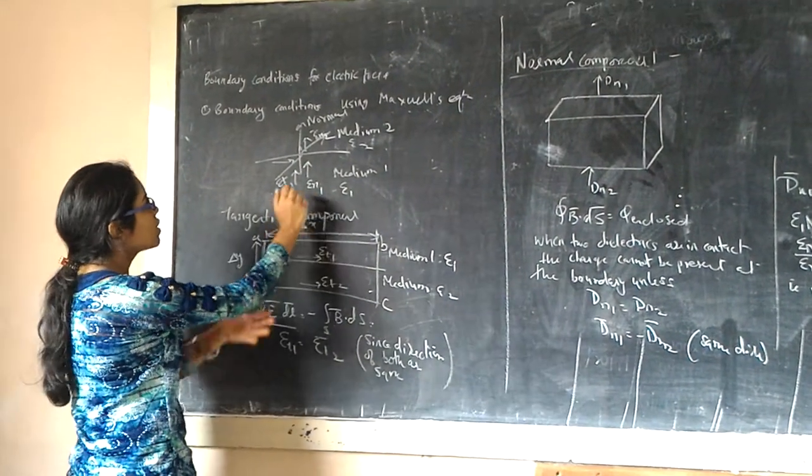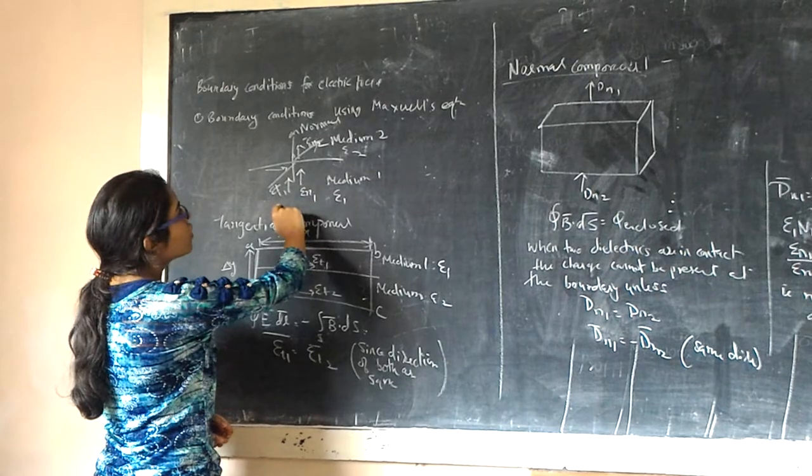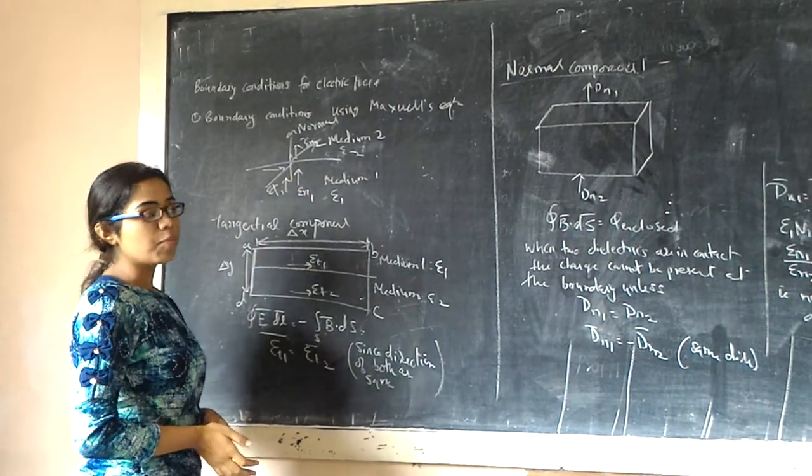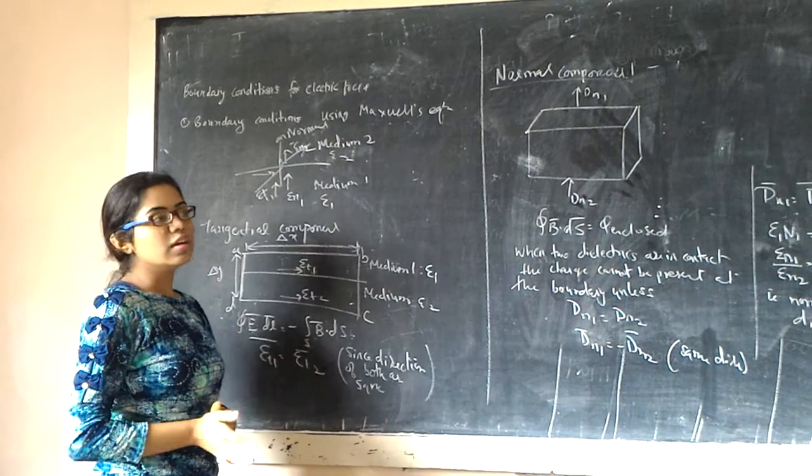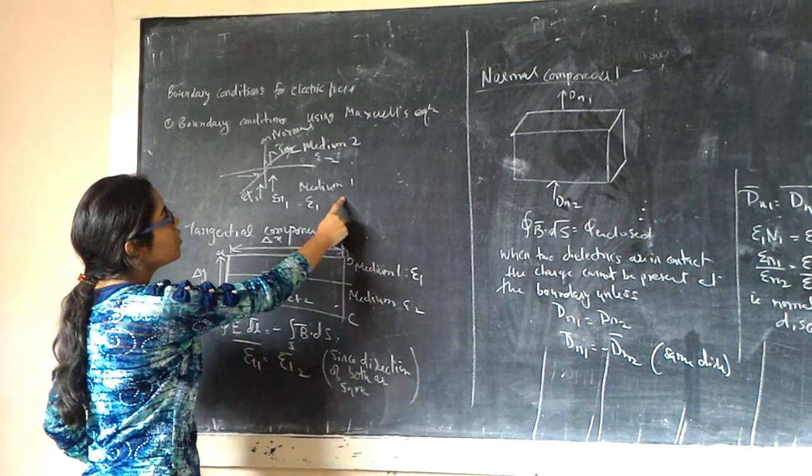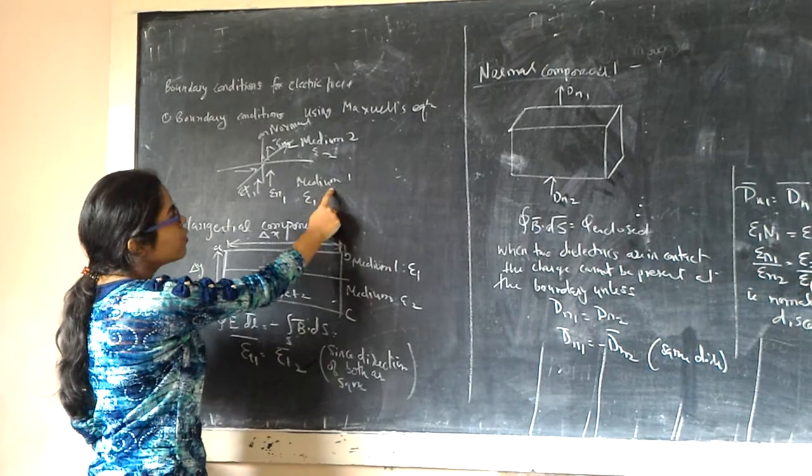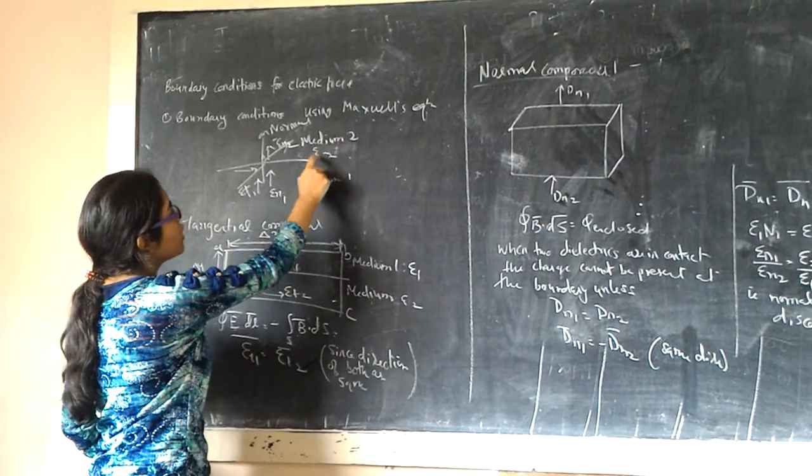As you see in the diagram for the normal, EP1 and EP2 represent tangential components. EN1 and EN2 are the normal boundary conditions. Here is medium 1, here is medium 2. In medium 1, E1 and in medium 2, E2.